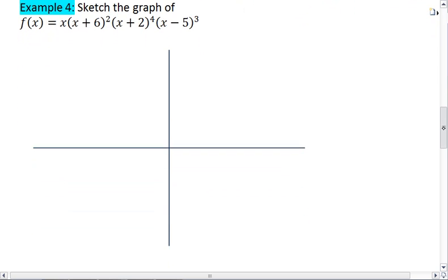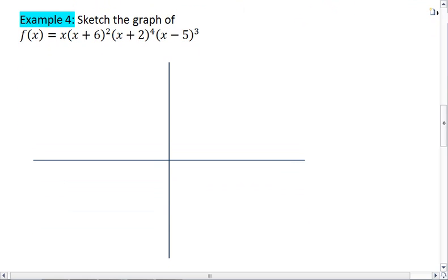So let's go through an example. Sketch the following graph of f(x) equals x times x plus 6 squared times x plus 2 to the 4th times x minus 5 to the 3rd, without using a graphing utility. I'm just looking for a sketch here. It doesn't have to be super accurate. You don't have to have each peak the accurate height. But be careful about the roots and the behavior around the roots. Try that on your own first. And then when you're ready, you can resume the video and see the solution.